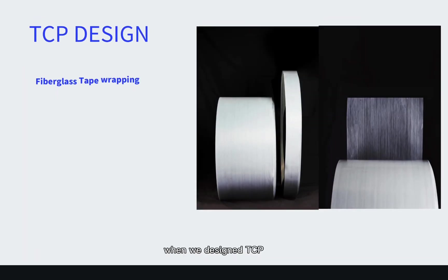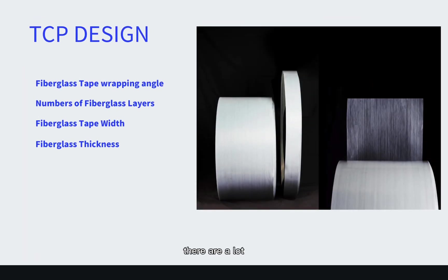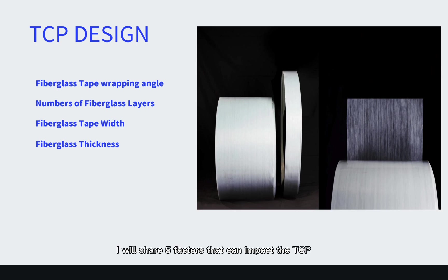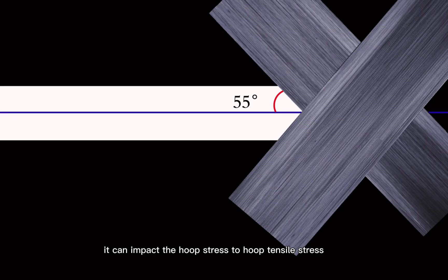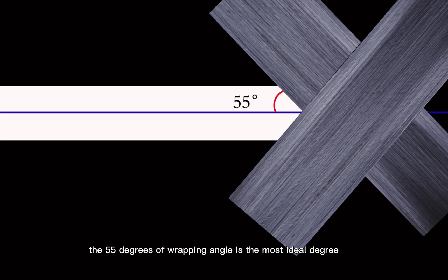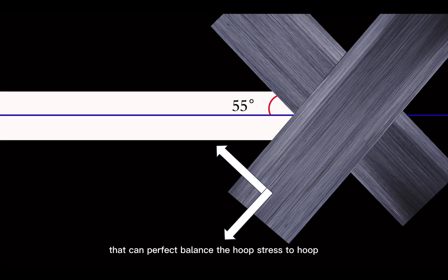When we design the TCP, there are a lot of factors that can impact the entire TCP pressure class. I will share five factors that affect TCP performance. The wrapping angle is quite important because it impacts the hoop stress and hoop tensile stress of the TCP. In our experience, 55 degrees is the most ideal wrapping angle to perfectly balance the hoop stress and hoop tensile stress.